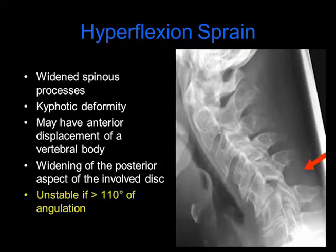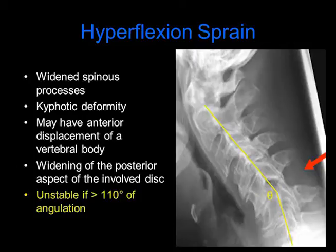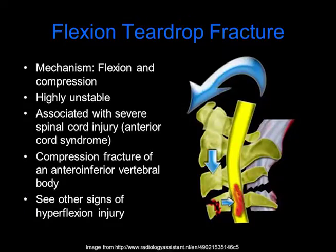With a hyperflexion sprain there are widened spinous processes, as we can see in this radiograph with the red arrow. As well, there is a kyphotic deformity which we can see with the yellow lines. You may have anterior displacement of one vertebral body on another, as well as widening of the posterior aspect of the involved disc. This is considered unstable if there are greater than 11 degrees of angulation.